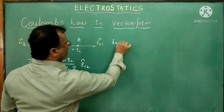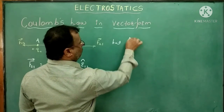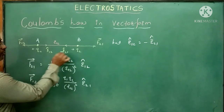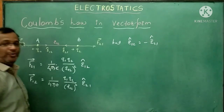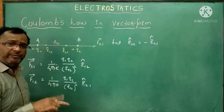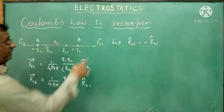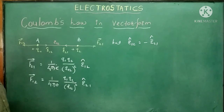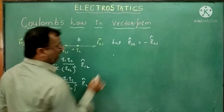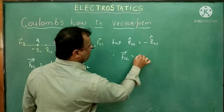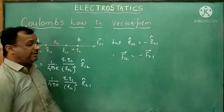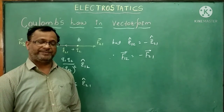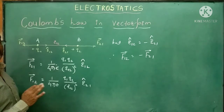Since magnitudes are the same and directions are opposite, unit vector R̂12 = −R̂21. If we substitute this into the equations, the magnitudes of forces F12 and F21 are also the same, but their directions are opposite. Therefore, F12 = −F21. This is the vector form of Coulomb's law — we express the electrostatic force in terms of vectors.